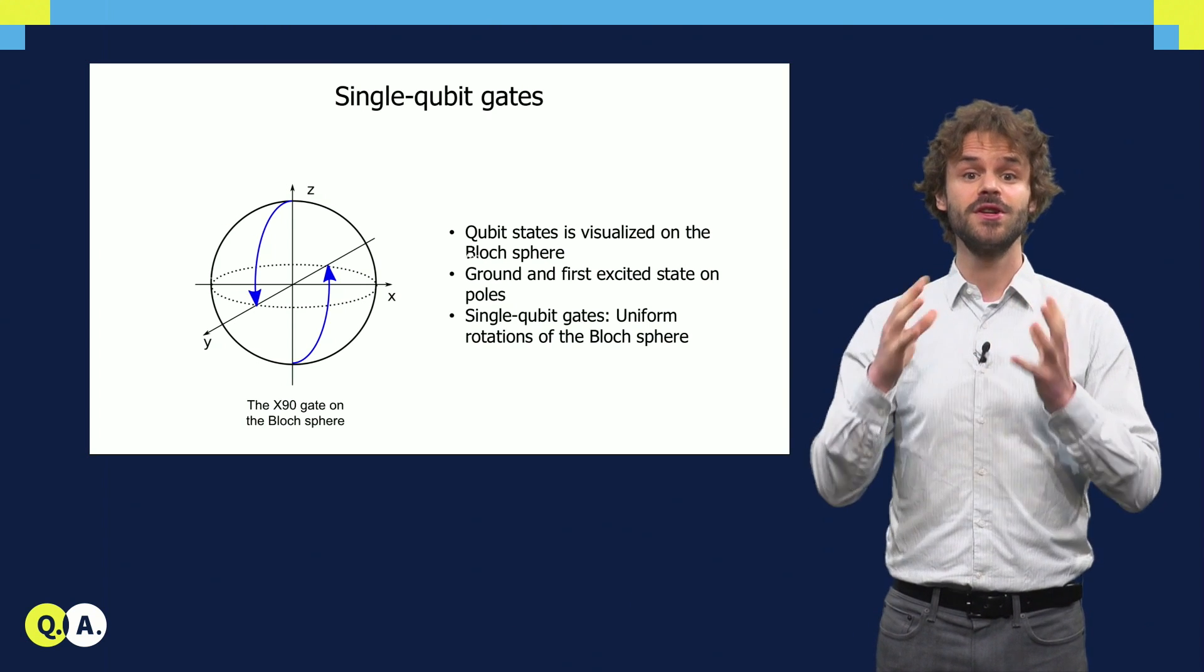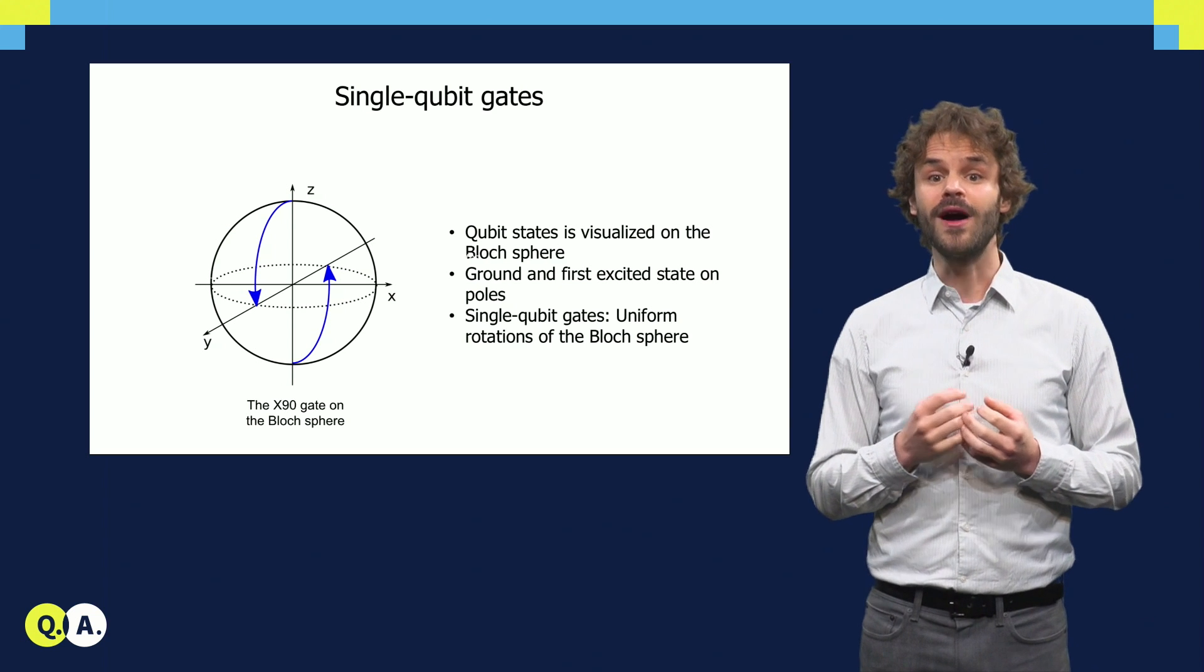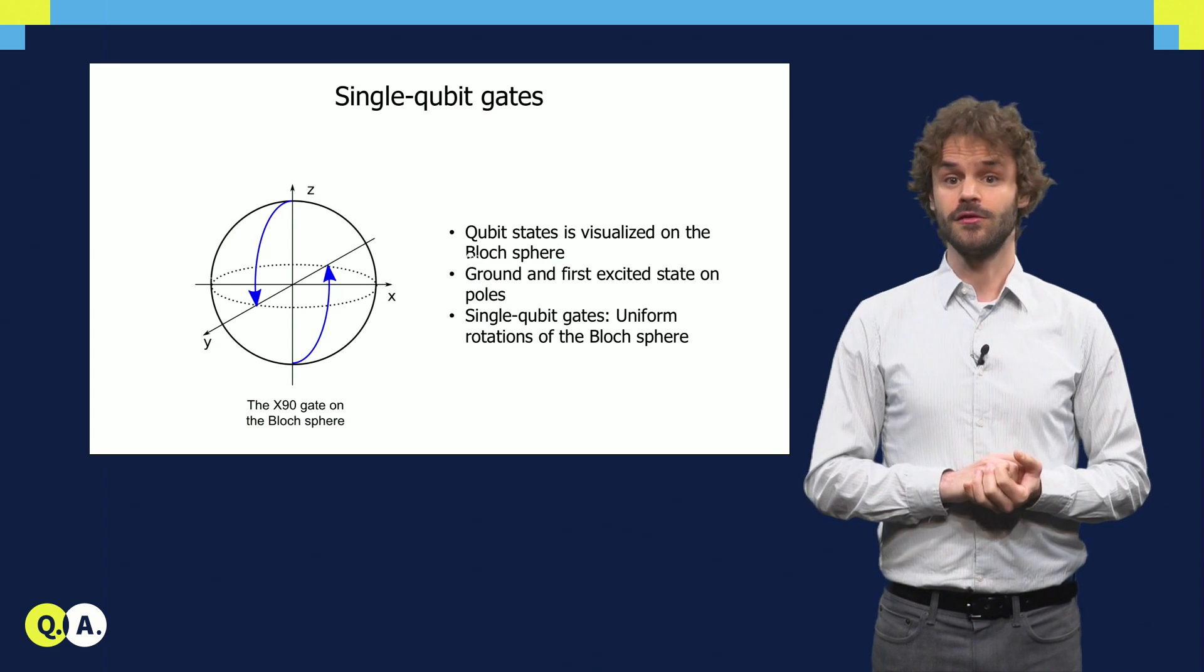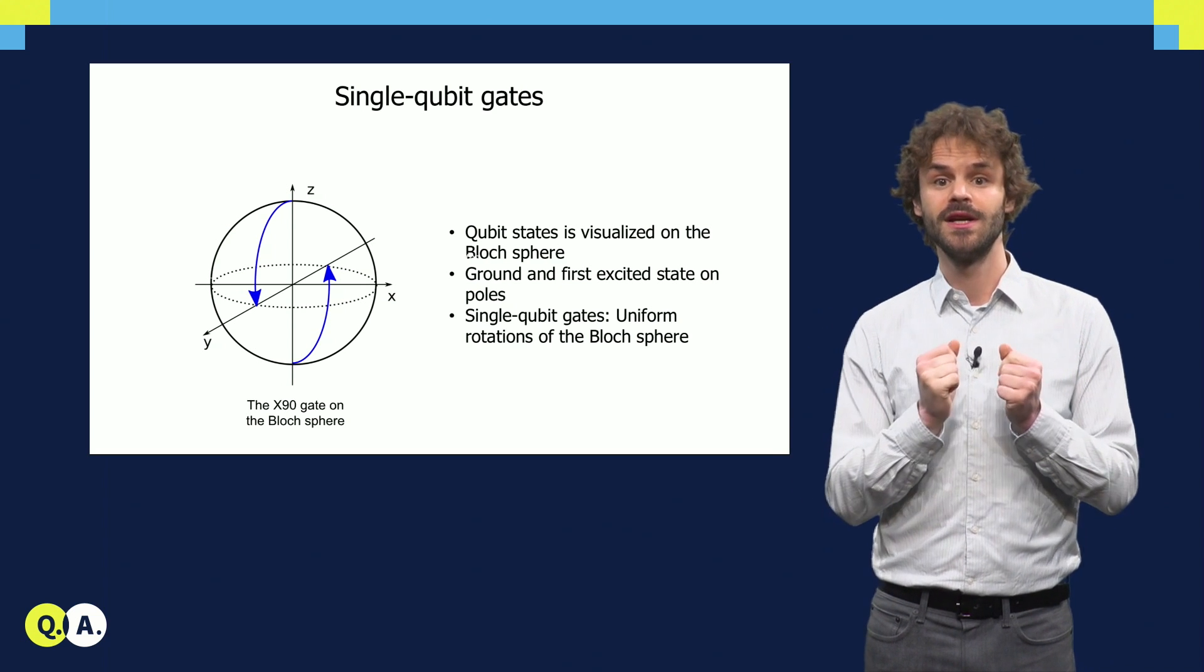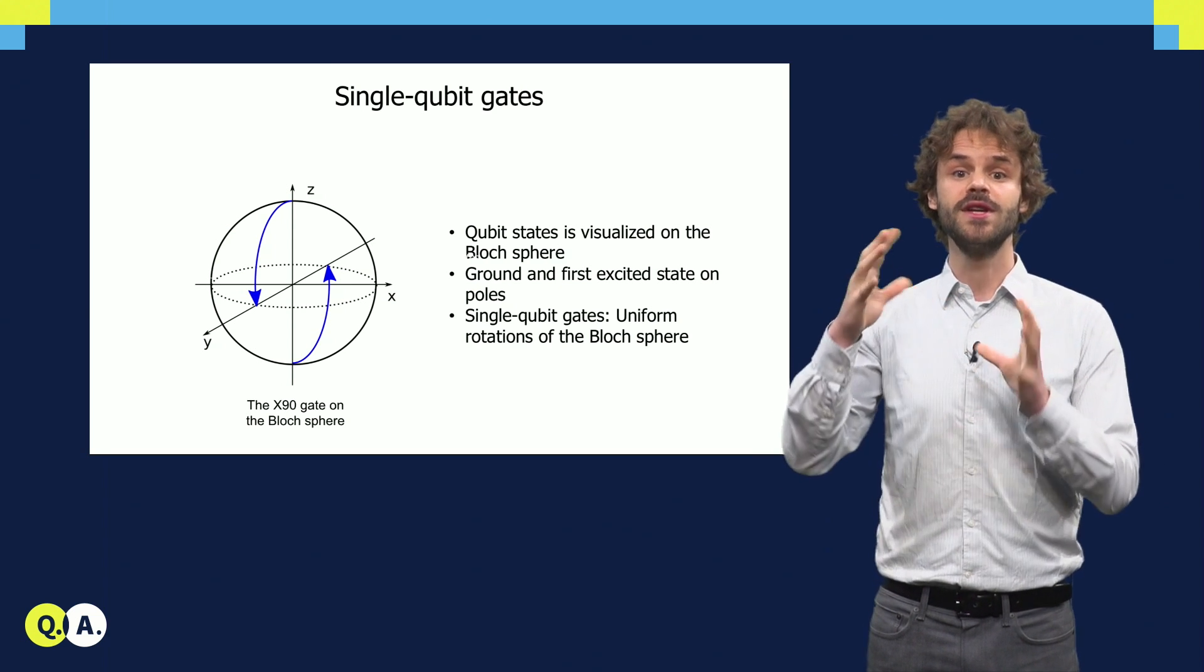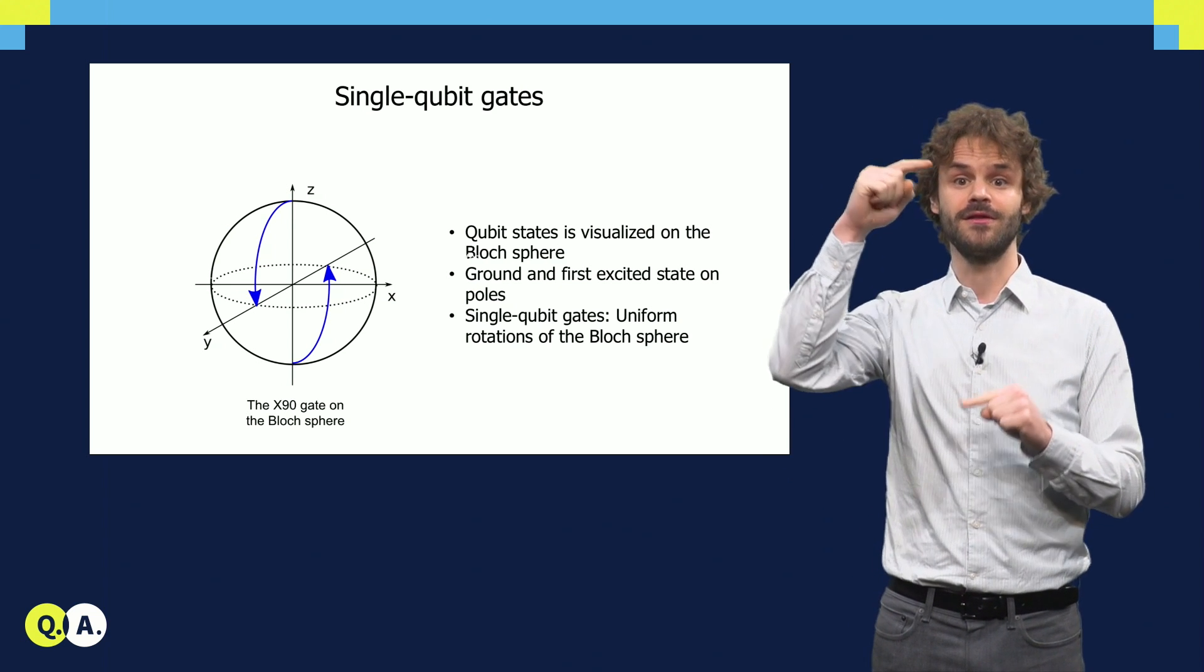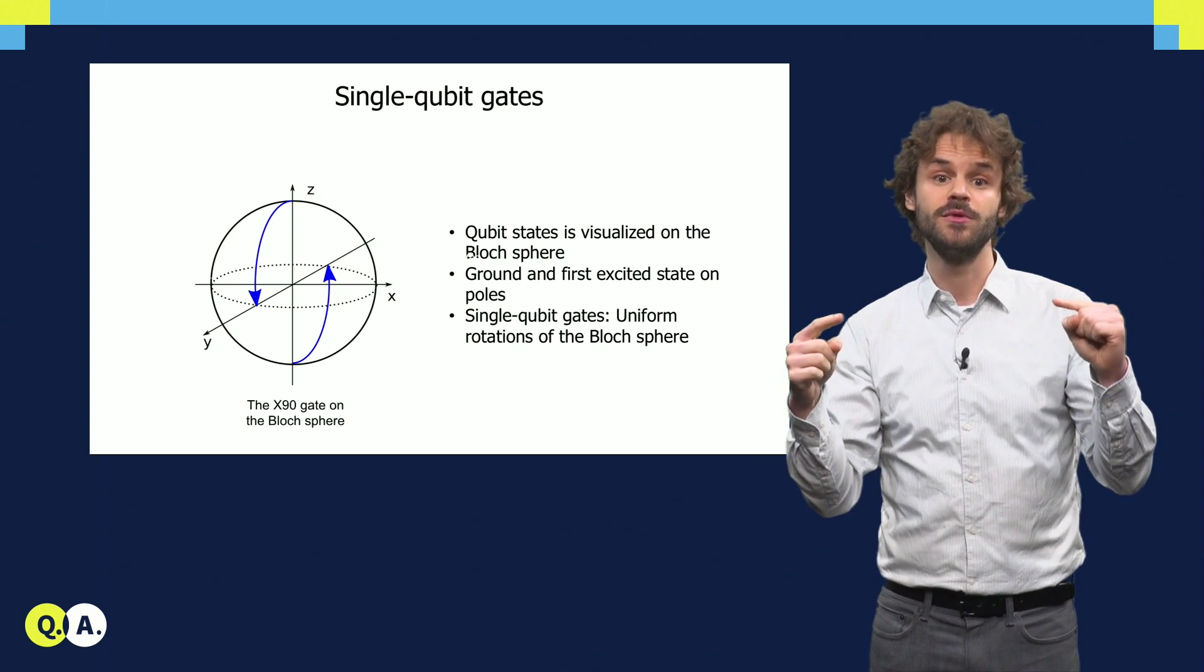The state of a single qubit can be visualized in the Bloch sphere, with the ground and excited state on the poles and the other points on the surface corresponding to quantum superpositions. Single qubit gates are then rotations of the Bloch sphere, for instance here the X90 gate, which converts the ground and excited states into superpositions.